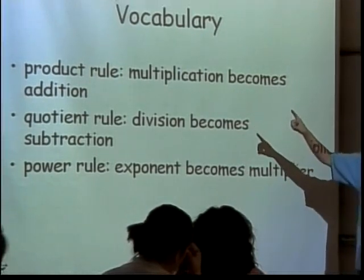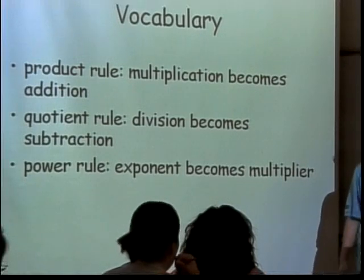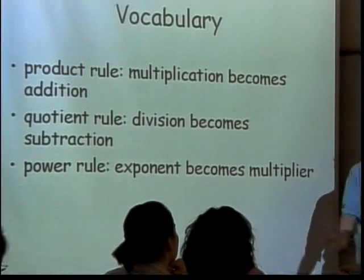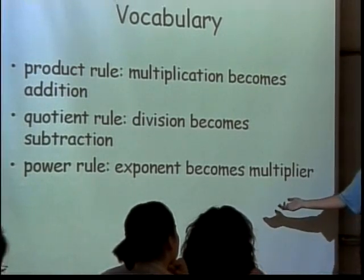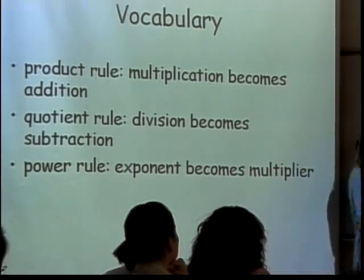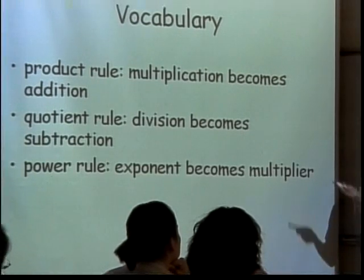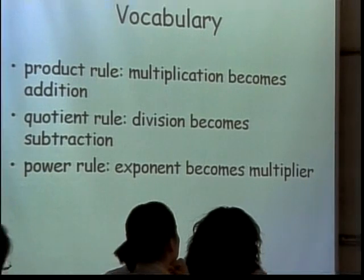And also the power rule where exponents become multipliers. Again, every one of those product, quotient, and power rules have a completely different meaning when it comes to calculus class. So that's why this is the first book I've ever seen name them that, and I've only seen one book name them the other things. So most people don't name them, they just say rule 1, rule 2, and rule 3. So what are these rules and how are they going to work?